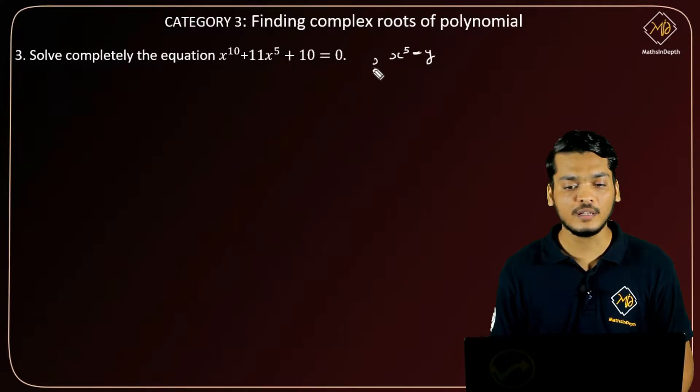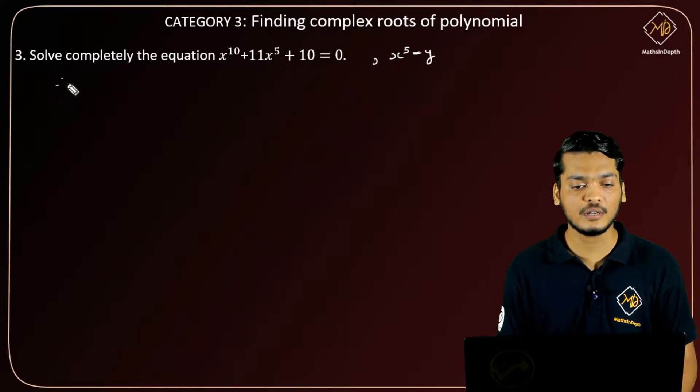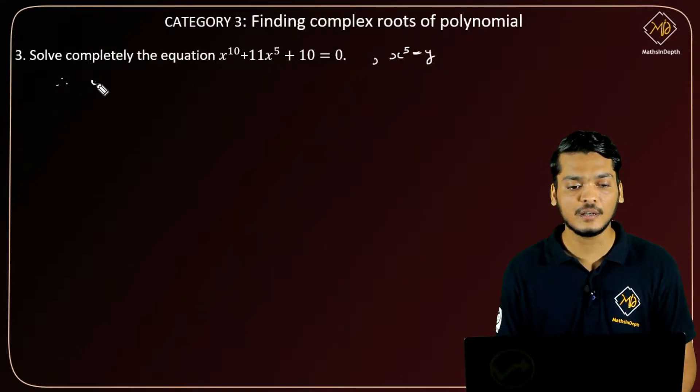equals to y. Therefore, this polynomial can be written as y^2 + 11y + 10 = 0, so this implies that y^2 + 10y + y + 10